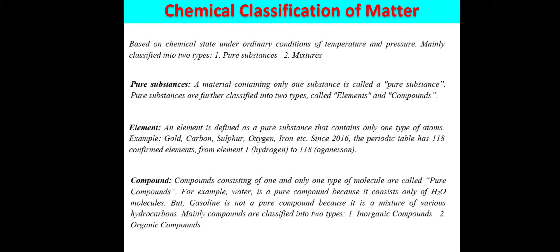In case of sulfur, allotropes like rhombic sulfur and monoclinic sulfur contain only pure sulfur atoms. Oxygen contains pure oxygen atoms with atomic number 8. Pure iron has atomic number 26 and contains 100% iron atoms. Since 2016, the periodic table has 118 confirmed elements, from element 1 (hydrogen) to element 118.